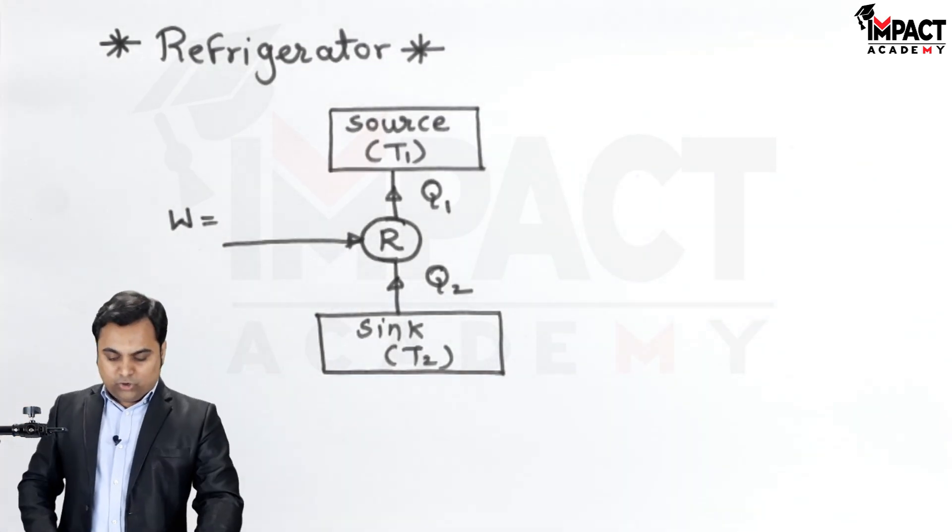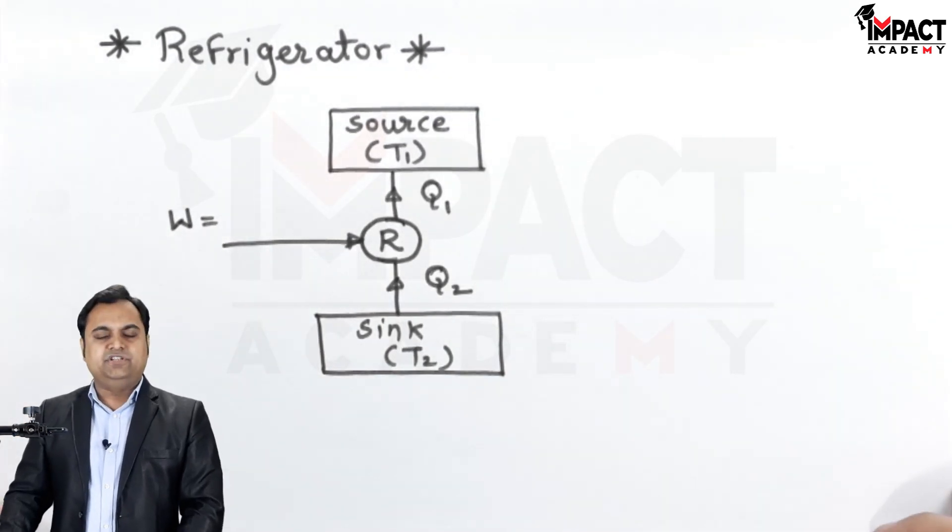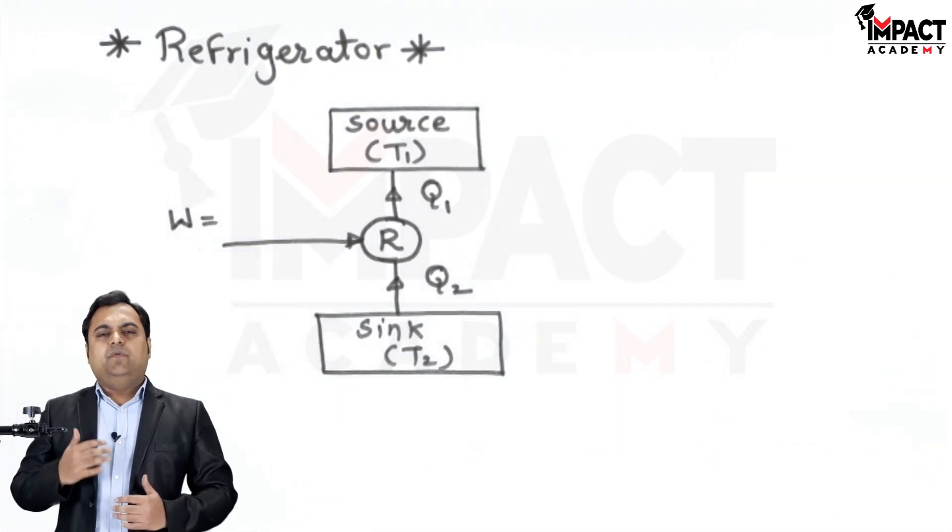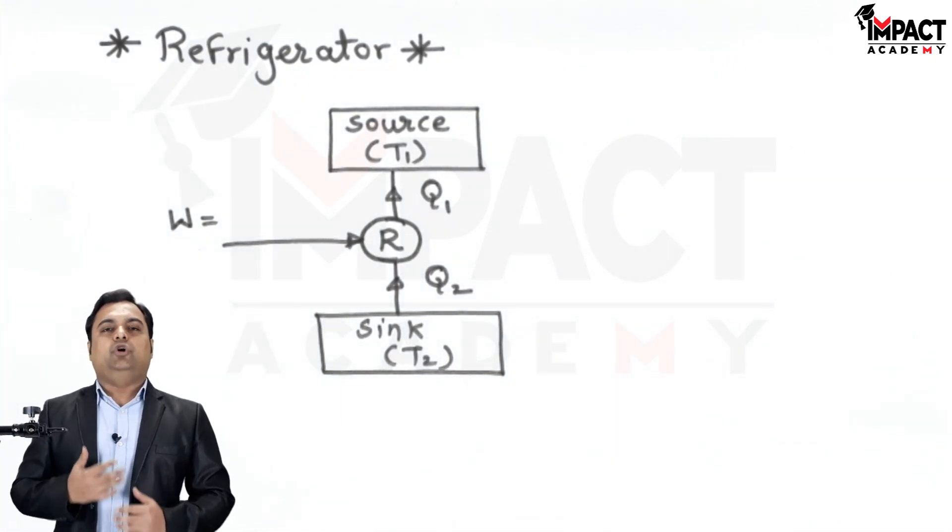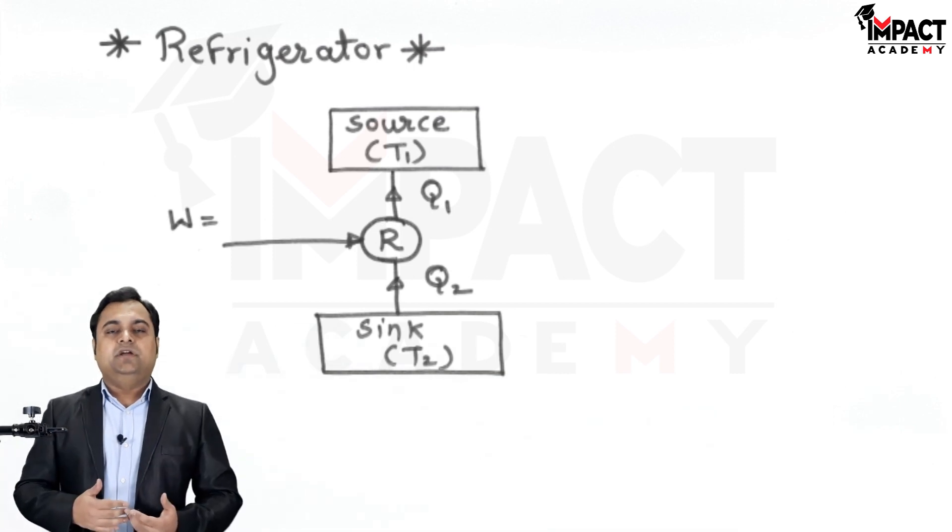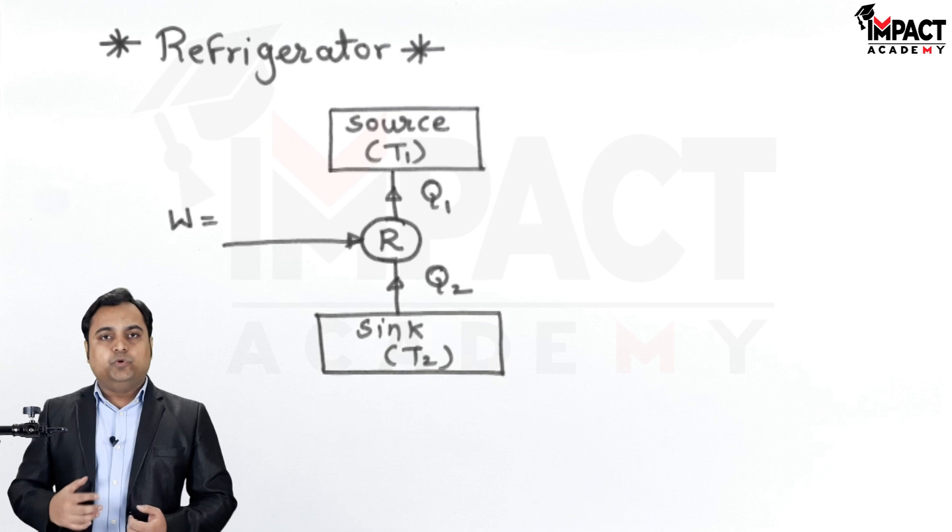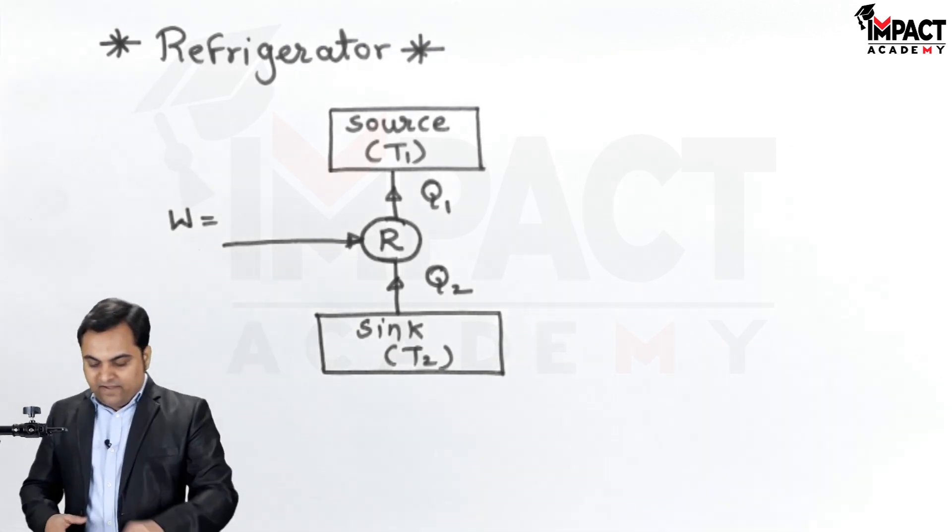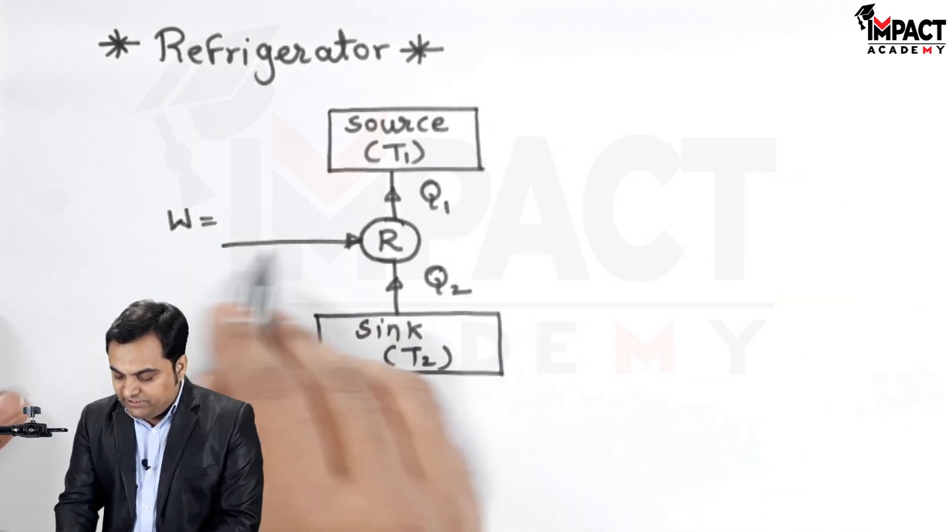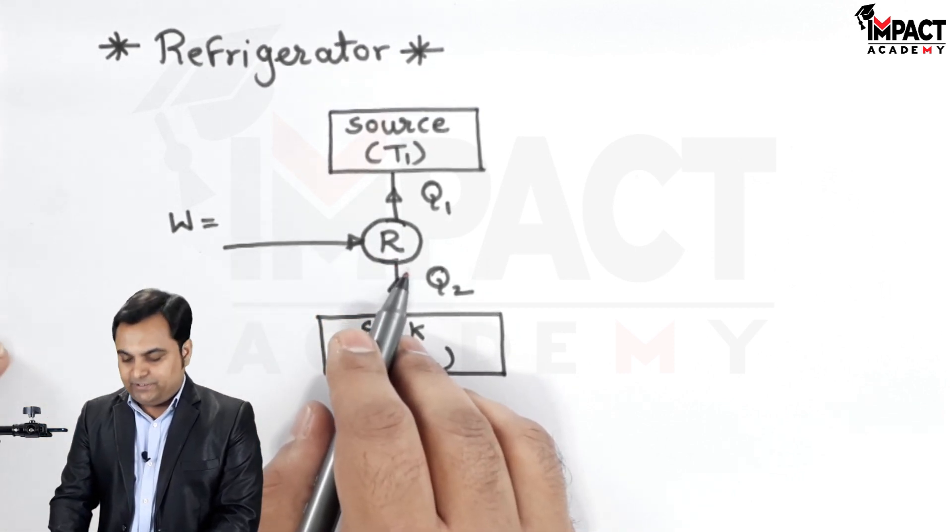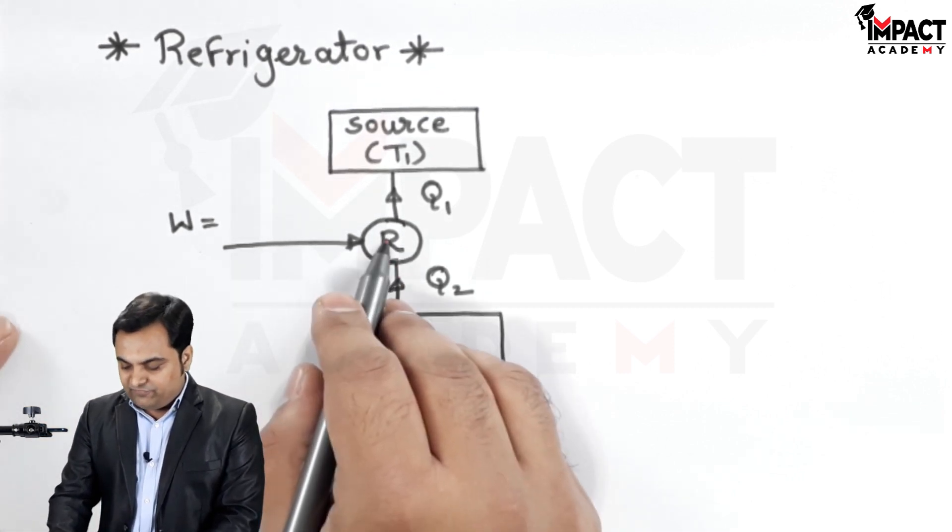Now here I have drawn a diagram of a simple refrigerator. Refrigerator is basically a work consuming device or a work consuming machine. Without any work input it cannot give the output. Here I have shown an arrow indicating the work input W which is given to the refrigerator.